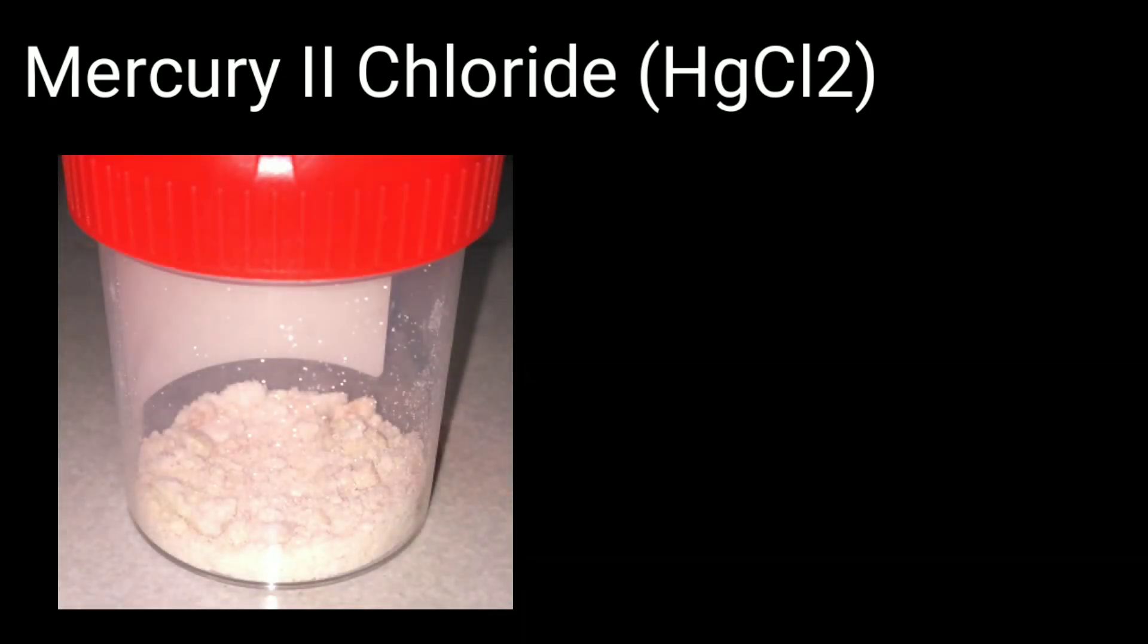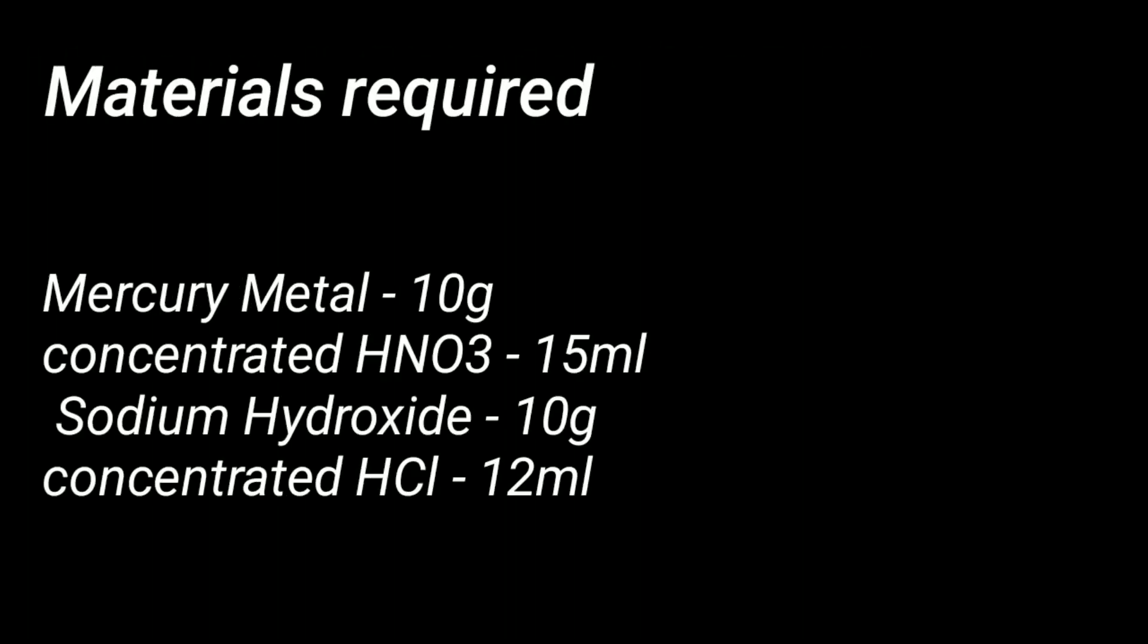The problem here is that we cannot directly make the compound by merely adding mercury metal to hydrochloric acid because the reaction between them is very poor. So first we do a nitration by adding concentrated nitric acid to make mercury nitrate, and then we convert it into the mercury oxide, and then add hydrochloric acid into it to make the mercury chloride.